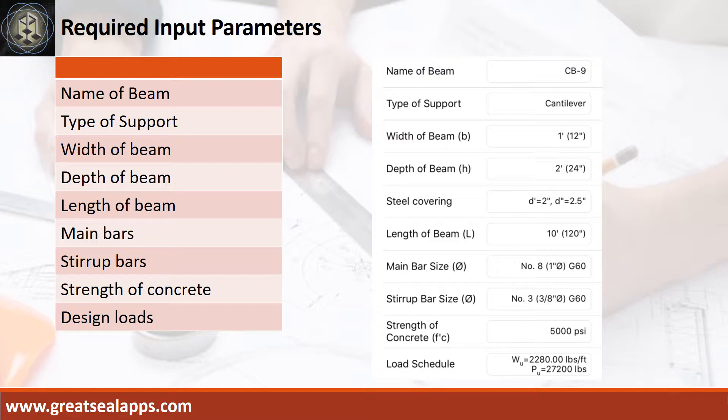Main bars, 1 inch diameter at grade 60. Stirrup bars, 3/8 inch diameter at grade 60. Strength of concrete, 5,000 PSI. Factored uniform load is 2,280 pounds per foot and factored concentrated load is 27,200 pounds.